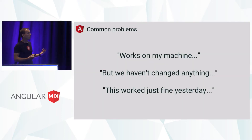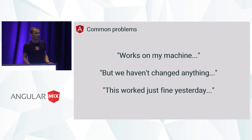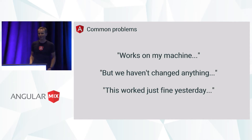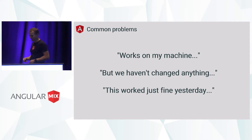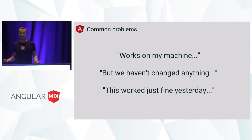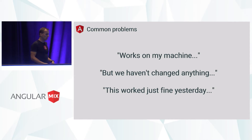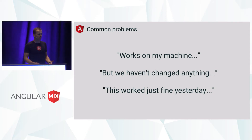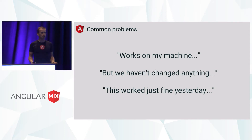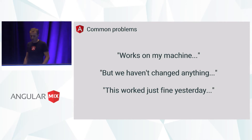The common problems are things like the old person claiming that code works on their machine but it doesn't work in production — probably everybody knows this one. Situations where the code suddenly breaks without us changing anything, and we don't understand what changed. Or: it worked fine yesterday, we made a bunch of changes that looked innocent, and now it doesn't work anymore but we don't understand why.